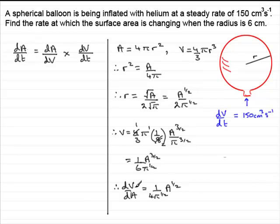So now that we've got dV by dA, we can now carry on with this formula, because dA dV will be 1 over this, which will be as if we turn it upside down. So that's going to be 4 pi to the half, all over A to the power half. And then we've got times dV by dt. And we know that that's 150.